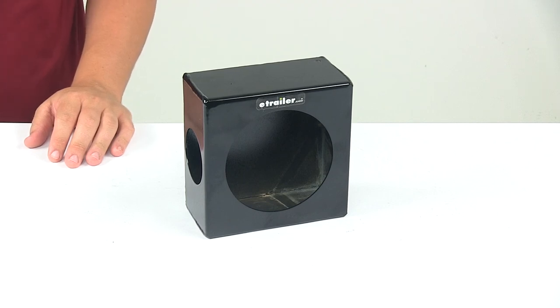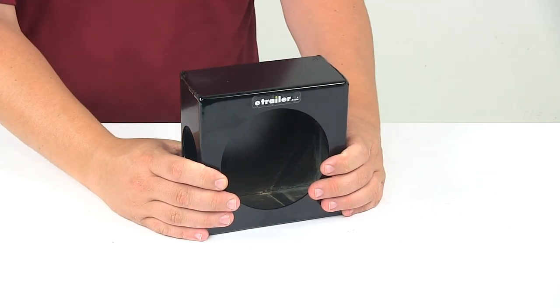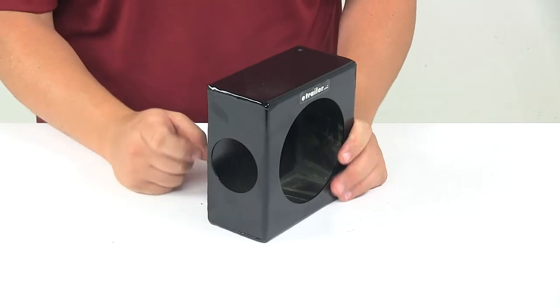Today we're taking a look at a taillight mounting box. This mounting box holds one round four inch taillight and one round side light.